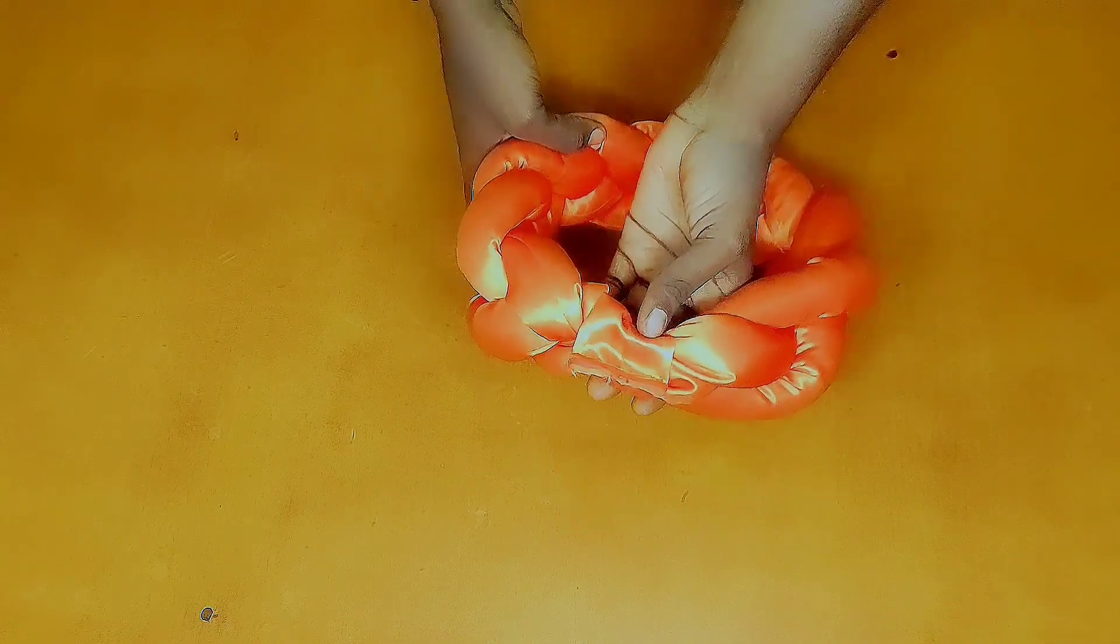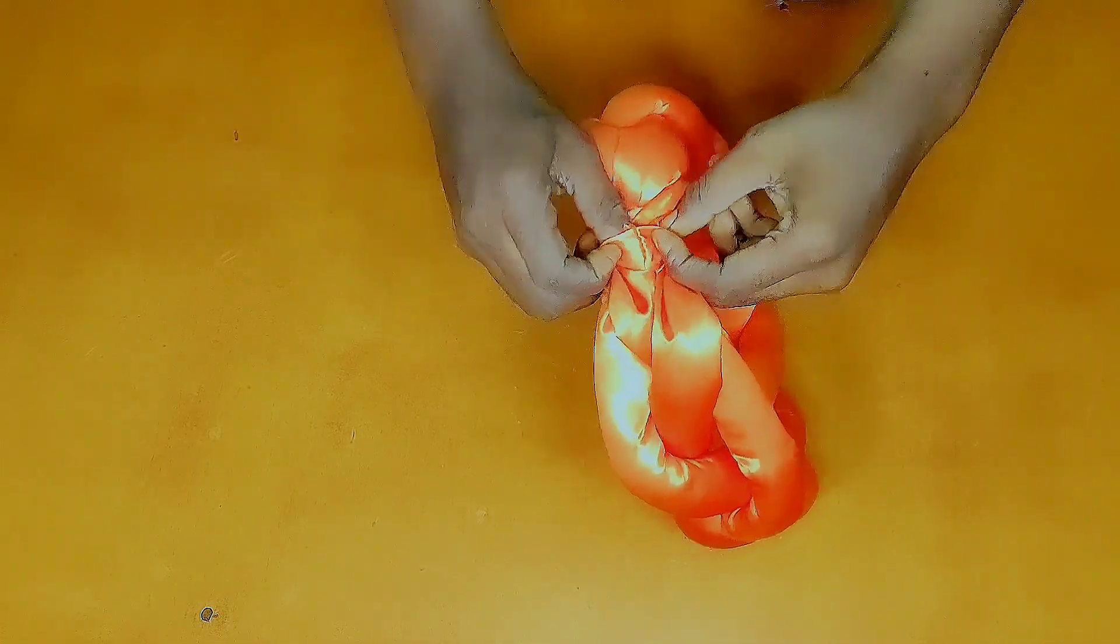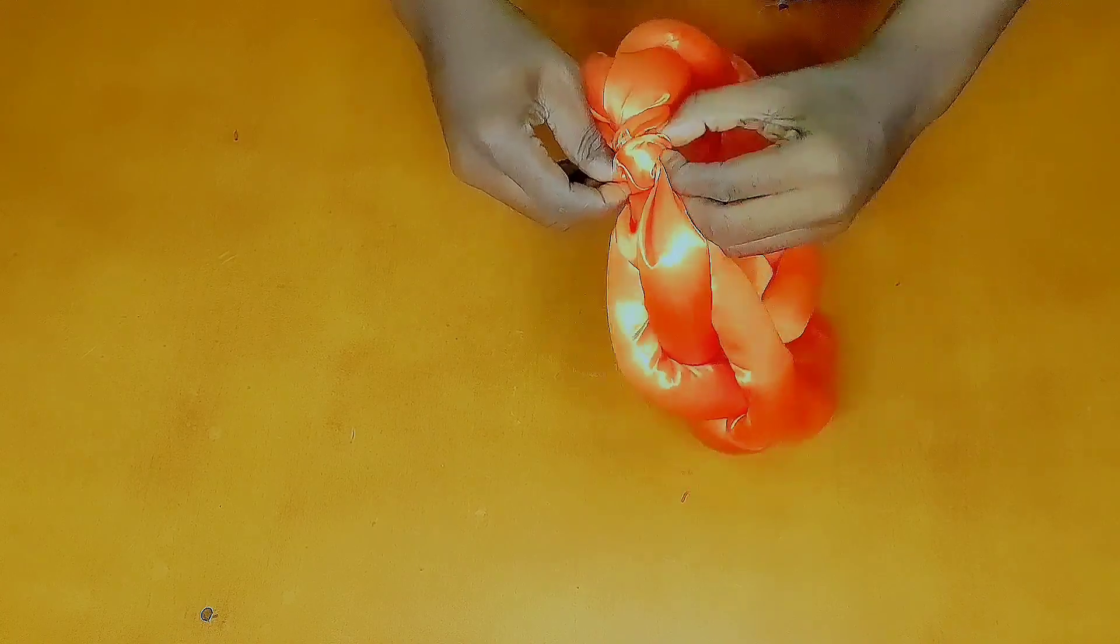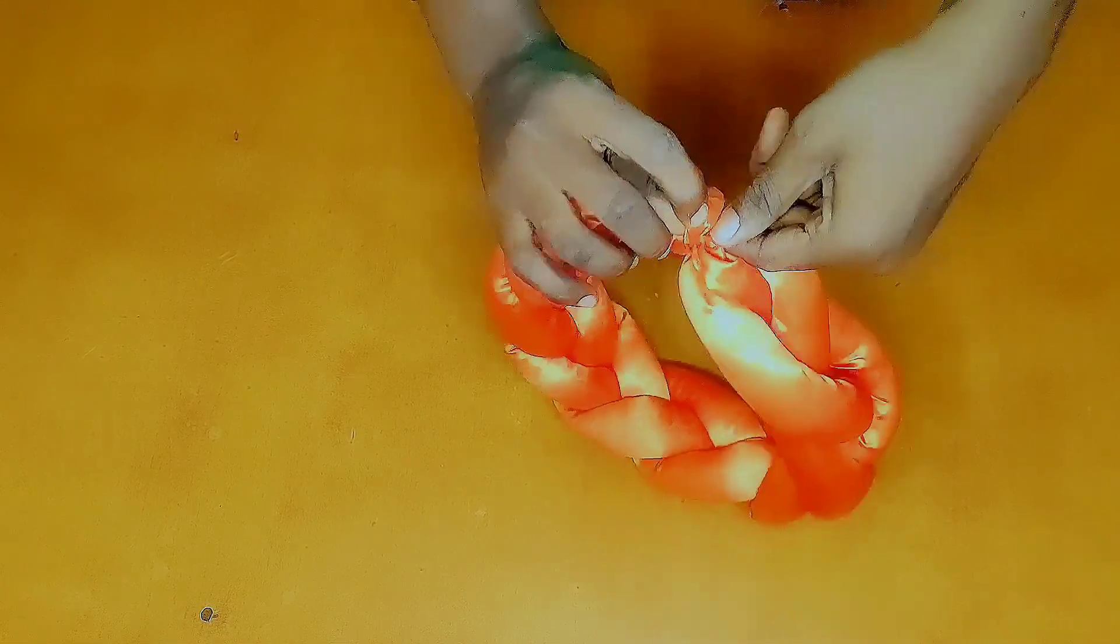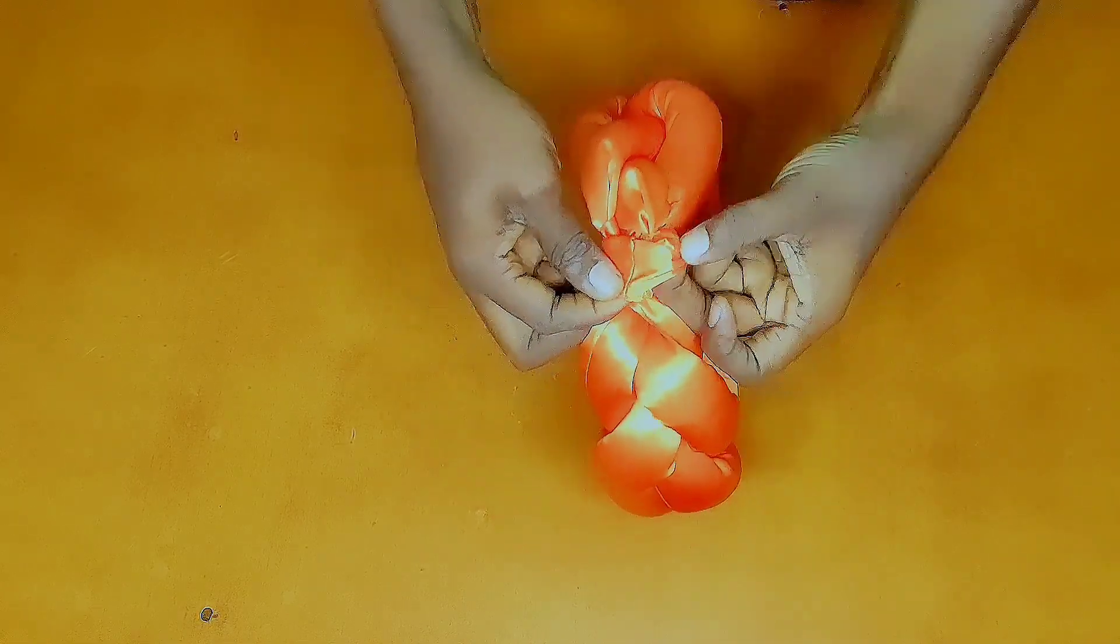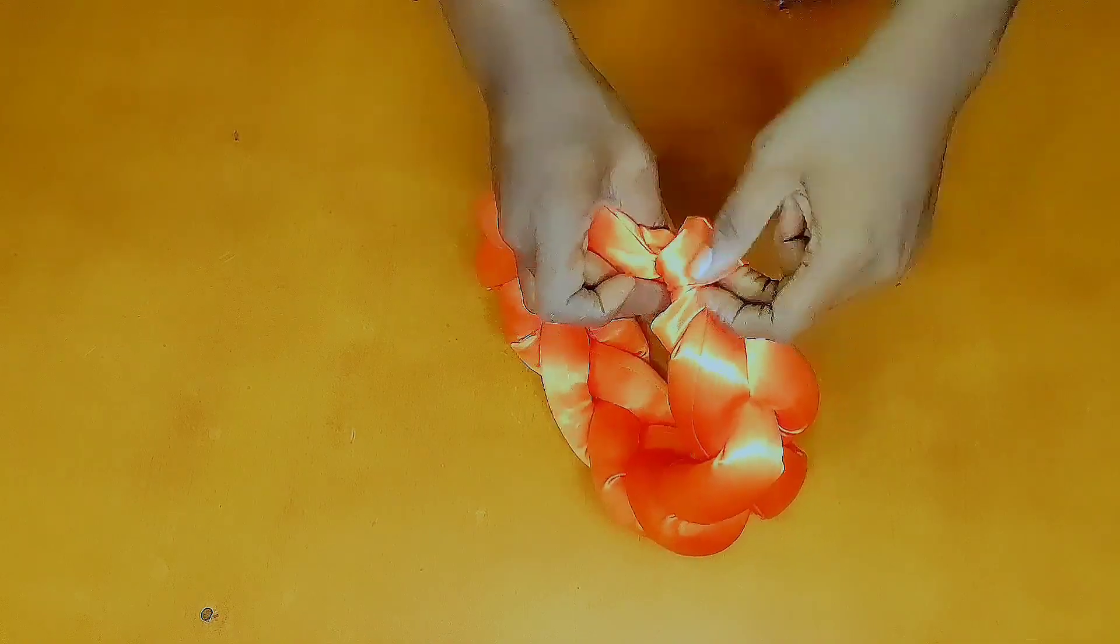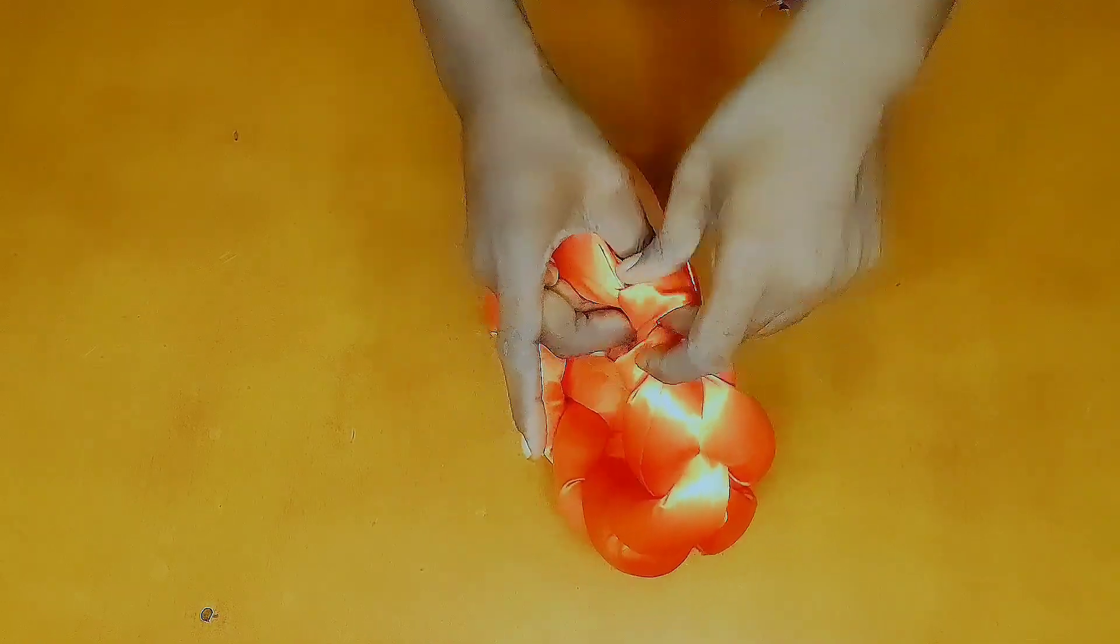After stitching, I went ahead to trim off the excess fabric around that area. I will flip the smaller piece this way. Make sure that the side seam of the smaller piece goes inside the headband.